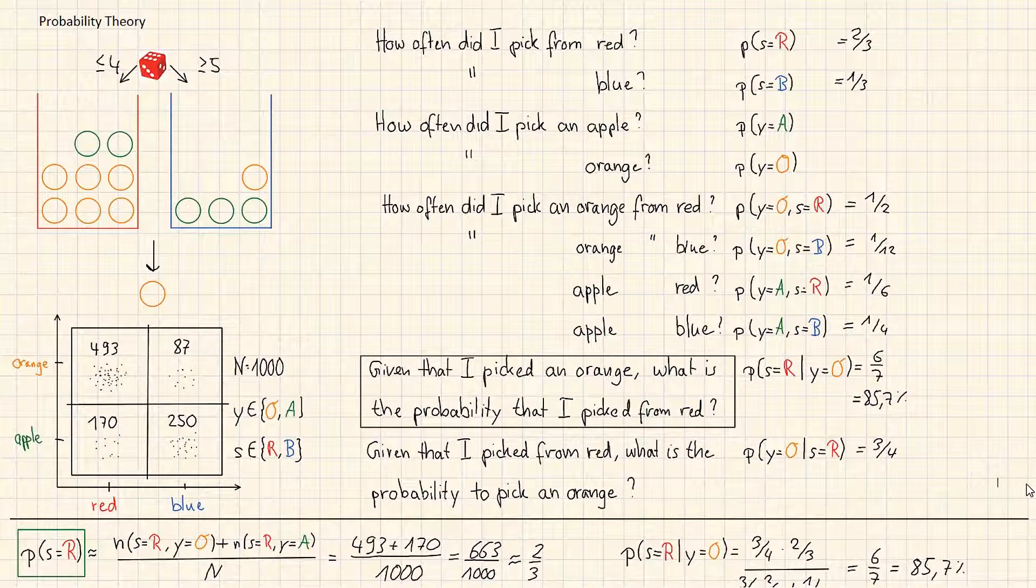And you will see that you may not want to pick from the red box this time. The probability changes. The probability that I picked from the red box decreases. And that just happens because of the data I am showing you. And the key for doing that is Bayes' rule.